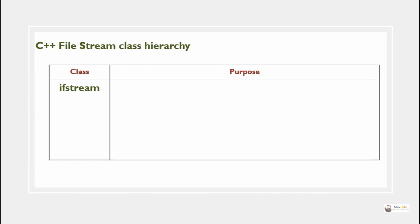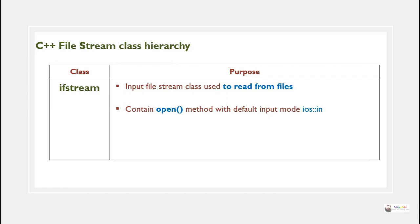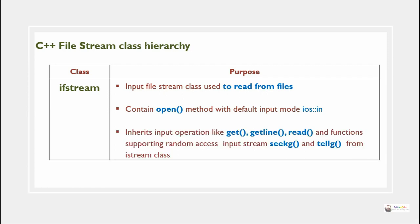The first file stream class is ifstream — the input file stream class used to read from files. It contains an open method with default input mode ios::in. It inherits input operations like get, getline, and read, as well as functions supporting random access input stream such as seekg and tellg from the istream class.